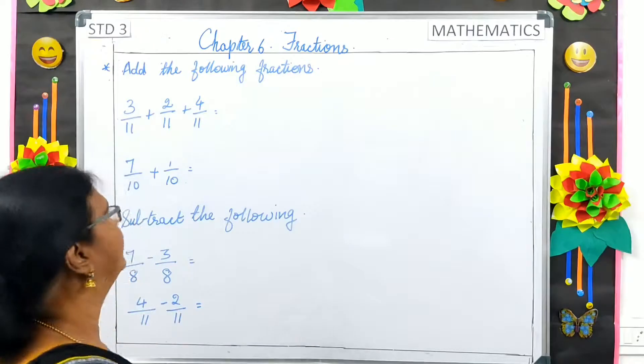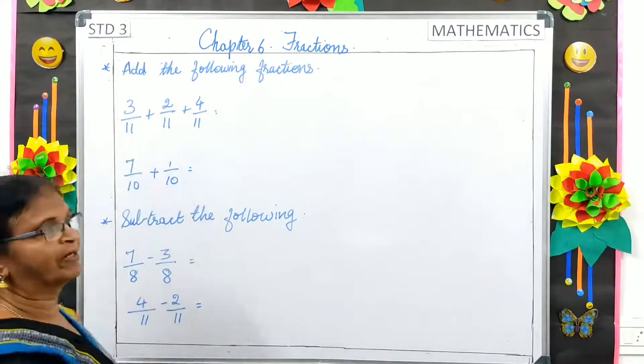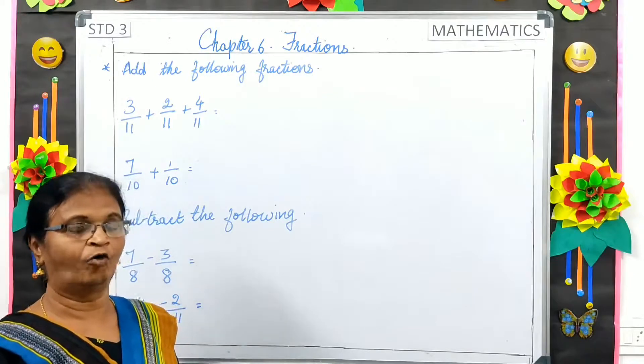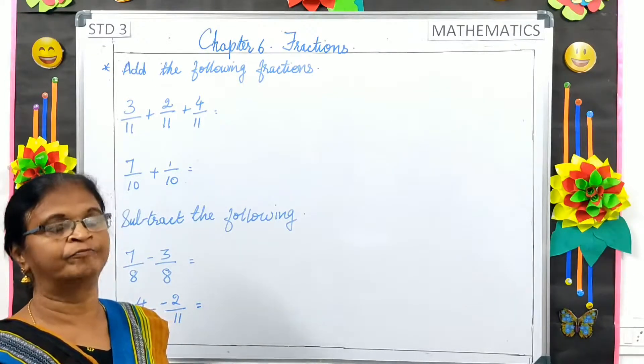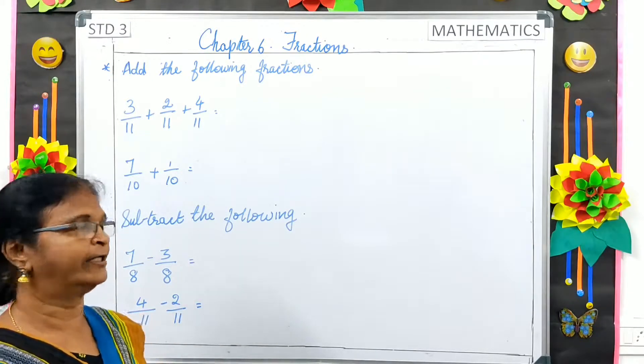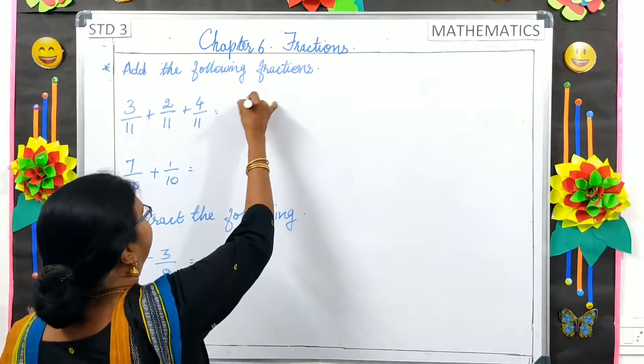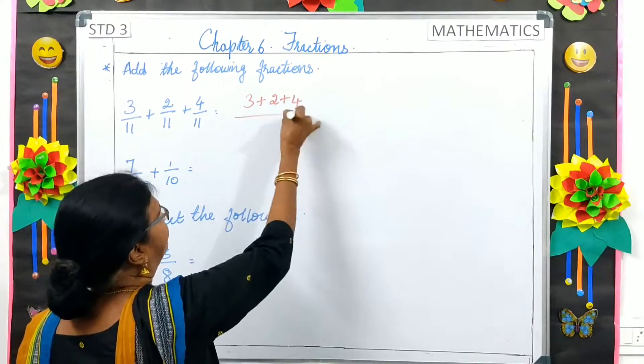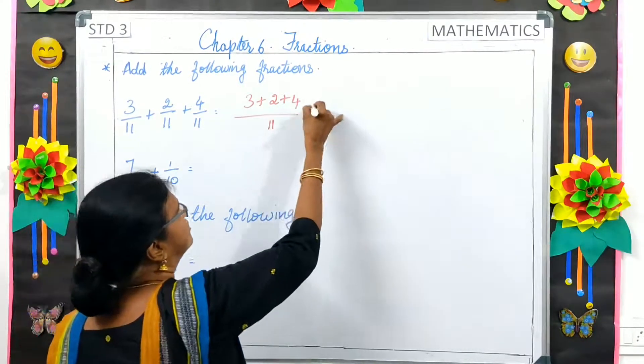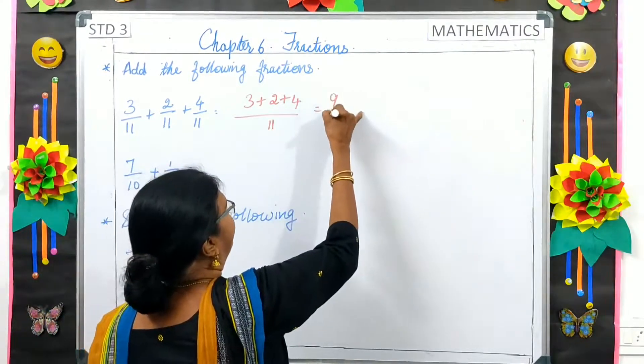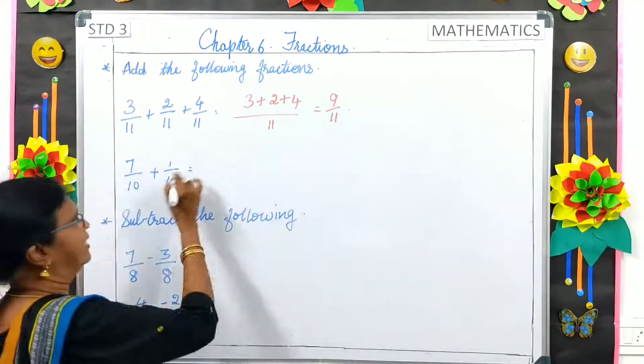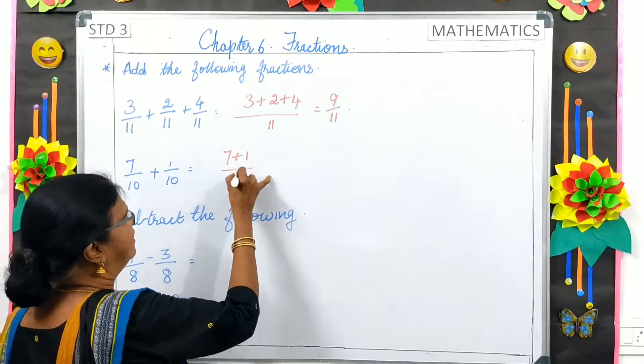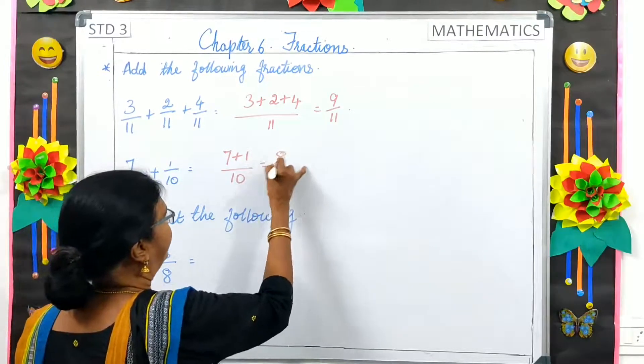Add the following. 3 by 11 plus 2 by 11 plus 4 by 11. Here, all the denominators are same, so we only add the numerators. That is, 3 plus 2 plus 4 by 11, is equal to 9 by 11. Then, the same way, 7 plus 1 by 10. That is, 8 by 10.